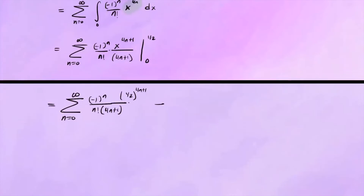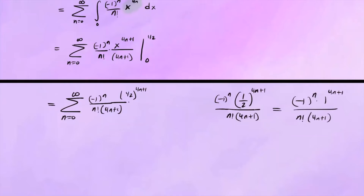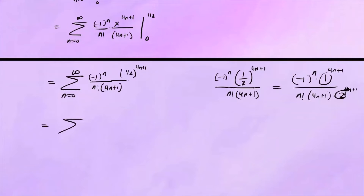Let's simplify a bit more. If we have 1 half to the power 4n plus 1, this is the same as 1 to the 4n plus 1 over 2 to the power of 4n plus 1. Since 1 to any power is always 1, we can drop that. So we get the sum from 0 to infinity of negative 1 to the n over n factorial times 4n plus 1 times 2 to the power of 4n plus 1.